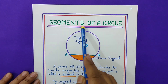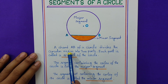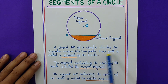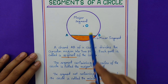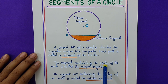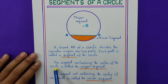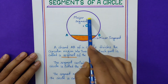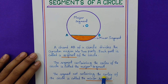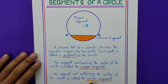Page number 7: segments of a circle. A chord AB divides the circular region into two parts — here AB divides the circle, and each part is called a segment. The segment containing the center is called the major segment — this is the maximum part, so it is called the major segment. The segment not containing the center is called the minor segment — minor means the smaller part.